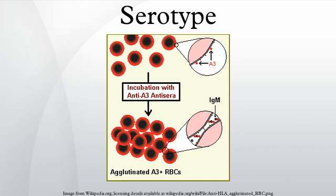Serotypes differ widely between individuals. Therefore, if cells from one human are introduced into another random human, those cells are often determined to be non-self because they do not match the self-serotype. For this reason, transplants between genetically non-identical humans often induce a problematic immune response in the recipient, leading to transplant rejection. In some situations this effect can be reduced by serotyping both recipient and potential donors to determine the closest HLA match.